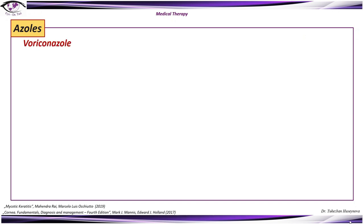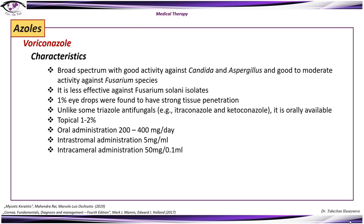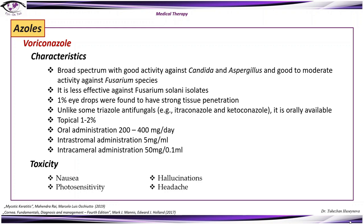Voriconazole is a broad-spectrum azole with good activity against Candida and Aspergillus, and good to moderate activity against Fusarium species, though it is less effective against Fusarium solani isolates. One percent eye drops show strong tissue penetration, and unlike itraconazole and ketoconazole, it is orally available. Topical use is at 1–2%, oral administration is 200–400 mg per day, with intrastromal and intracameral administration also possible. Toxicity includes nausea, photosensitivity, hallucinations in rare cases, headache, visual disturbances, and rash.